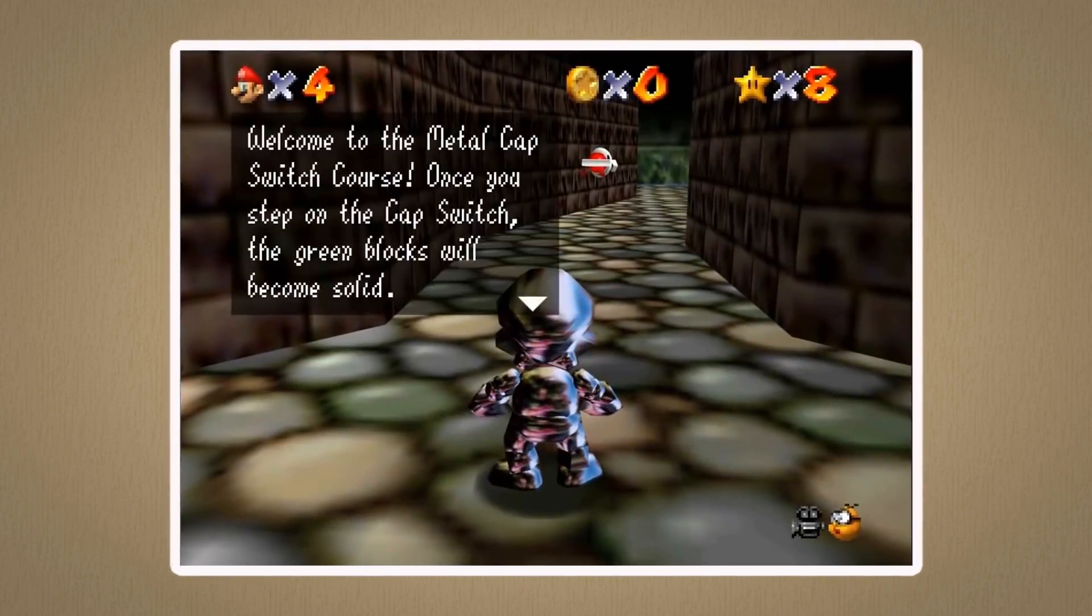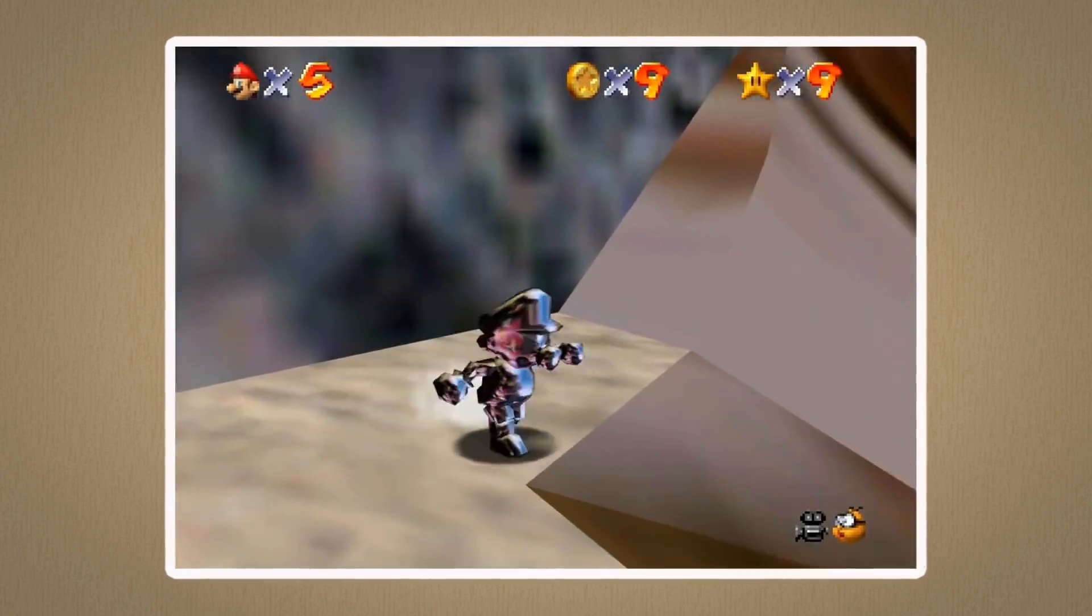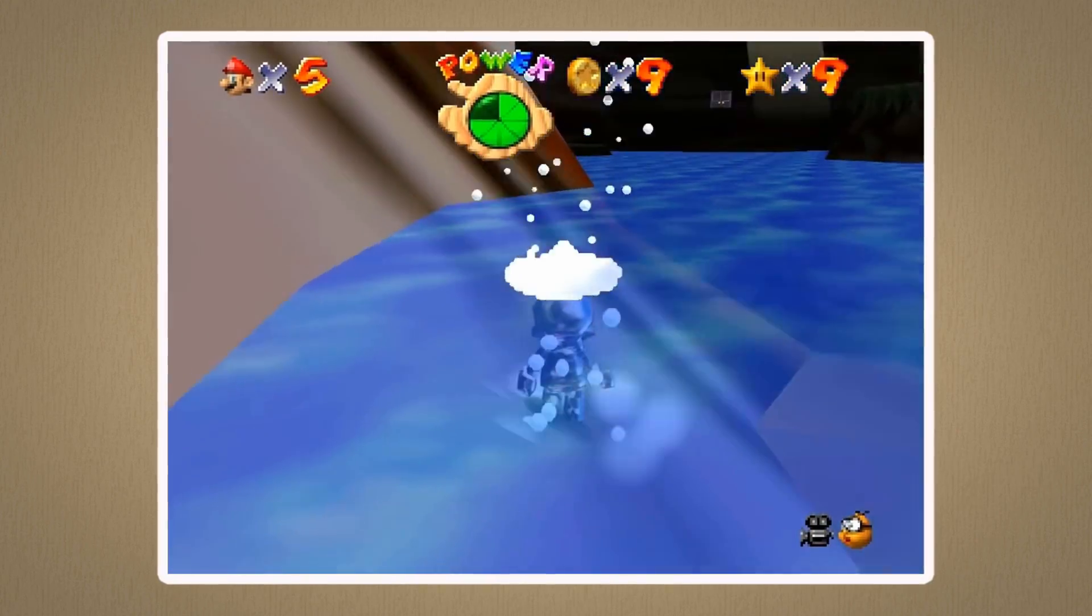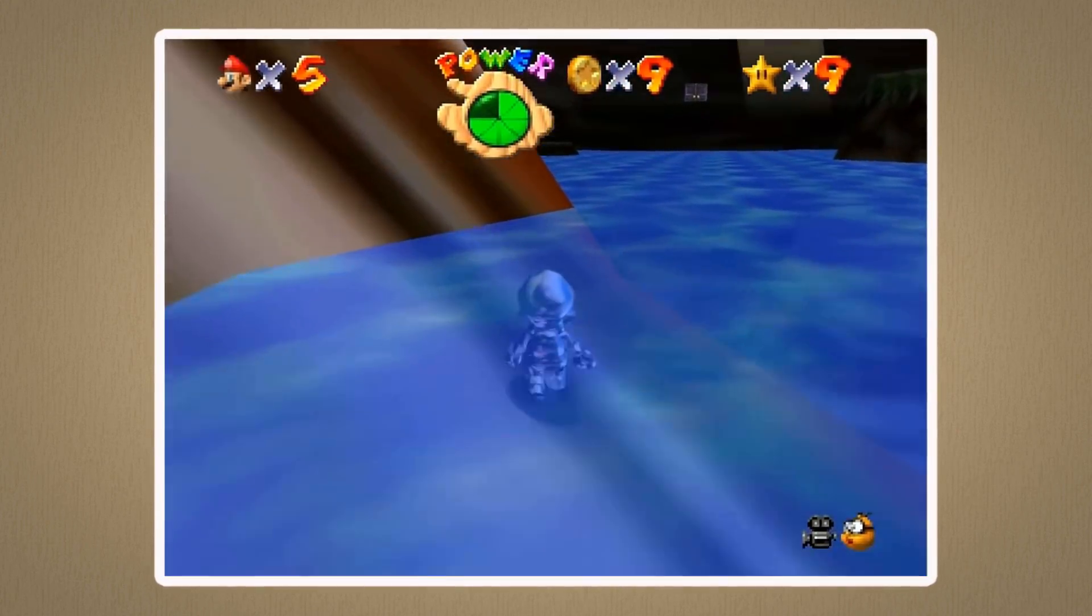Remember Metal Mario? It was a power-up in Super Mario 64 that turned Mario's body completely into metal, though he can still somehow move around just fine. It made him really heavy, meaning he could walk around at the bottom of a body of water.